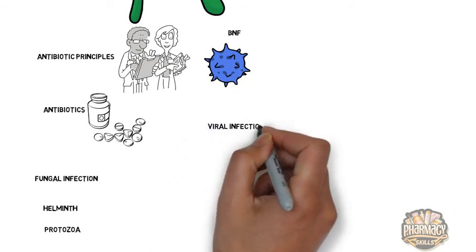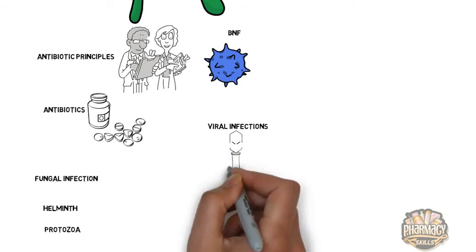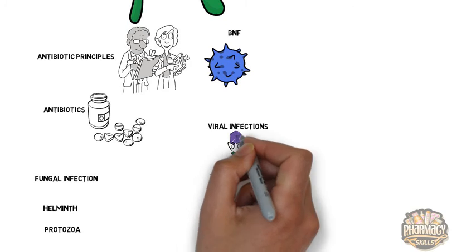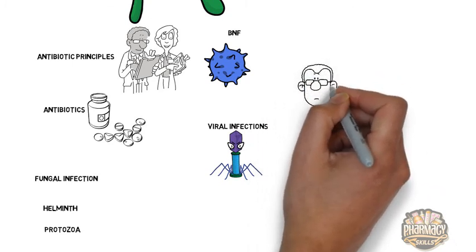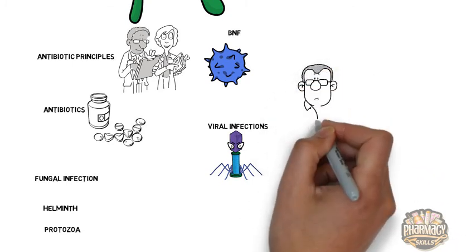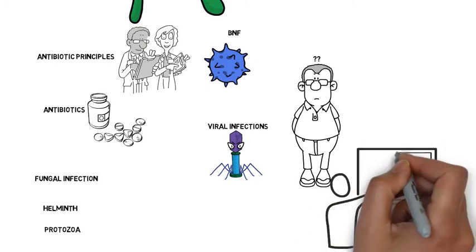This is a section often overlooked by pre-reg students or left to last. The section that some students are like 'oh that's the one thing I didn't revise.' Looking at viral infections, especially HIV drugs, it can be slightly overwhelming or like learning a new language because some of the drugs are extremely hard to pronounce, extremely hard to remember, and piecing together side effects and indications can be slightly confusing.